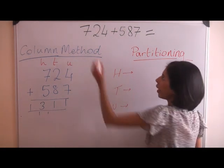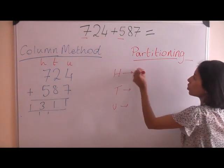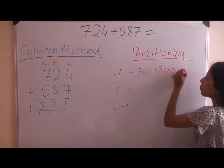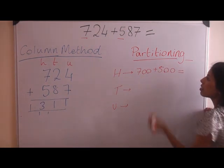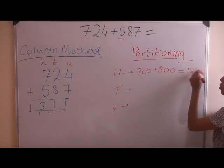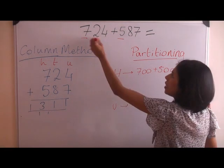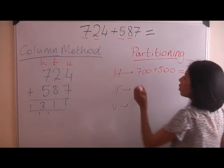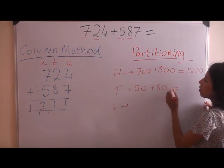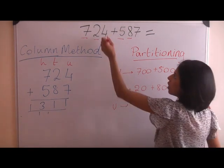So how many hundreds do we have? We have 700 plus 500, which gives you 1200. How many tens do we have? We have 20 and 80 — that's nice and easy — which gives us a nice even 100.